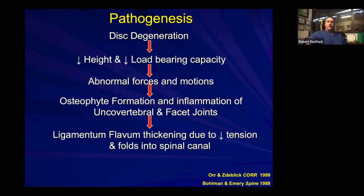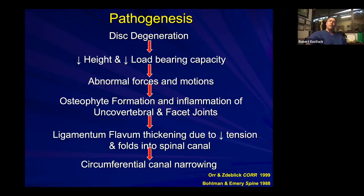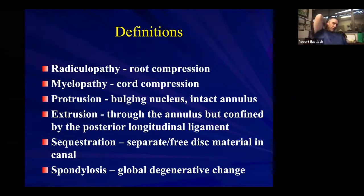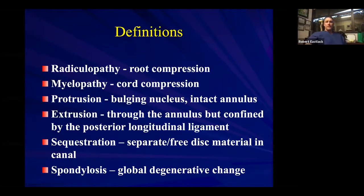You get ligamentum flavum thickening and redundancy. As disc height is lost, you get in-folding, and then you can get compromise of the spinal canal. Ultimately you can develop circumferential canal narrowing as a result of this sequence of events. For fellows and residents, there are different definitions we work with — radiculopathy and myelopathy definitions — that you obviously know.